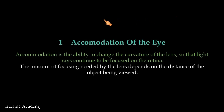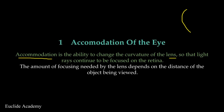So, accommodation of the eye — what is it? When we say accommodation of the eye, we are talking about the ability to change the curvature of the lens, so that light rays continue to be focused on the retina. What is curvature? Curvature just talks about the shape of something — whether it is kind of bent, curving, or flat, or bending a little bit.